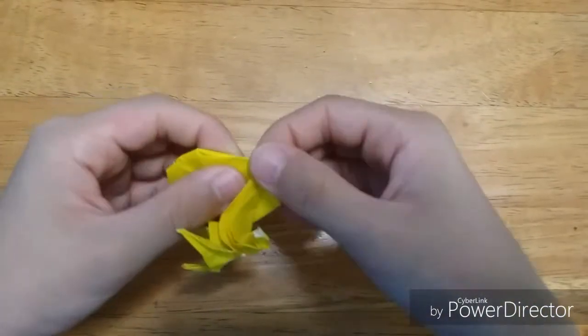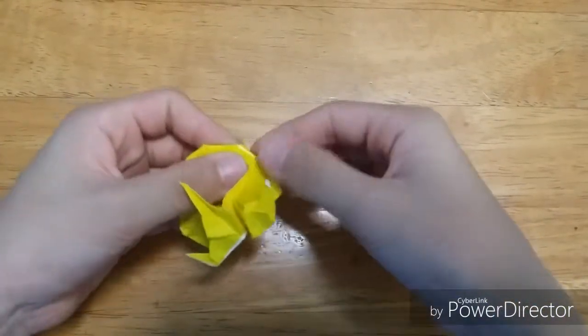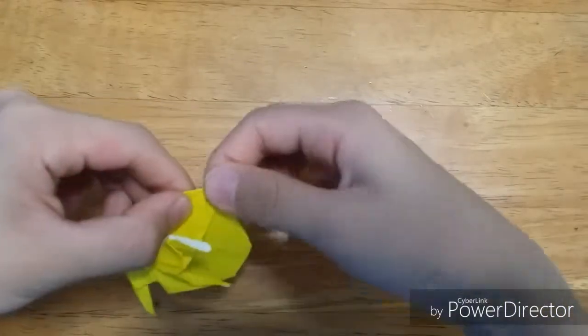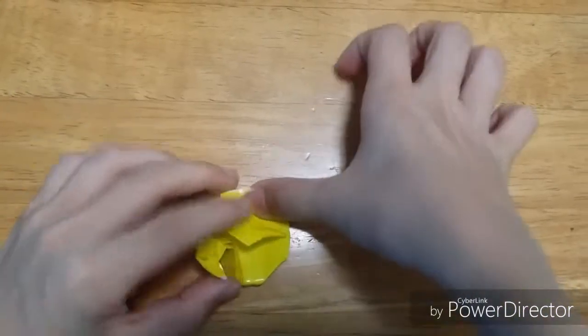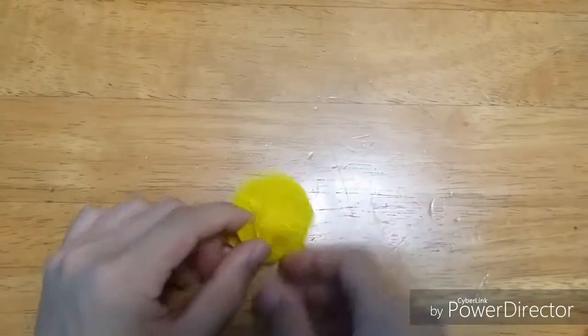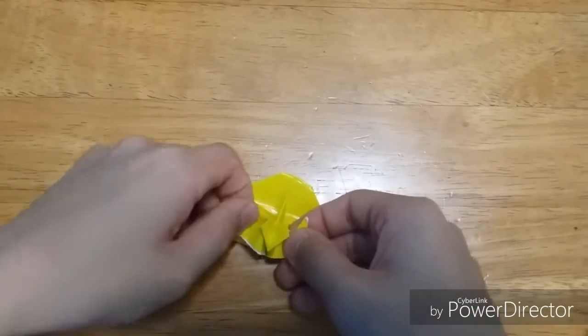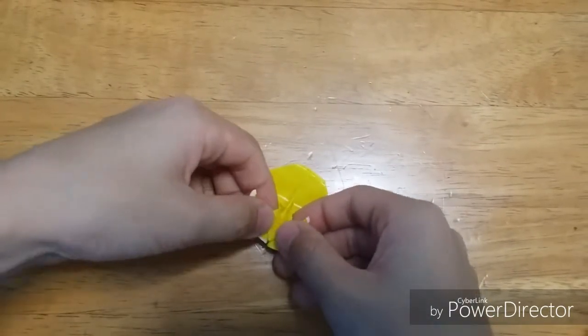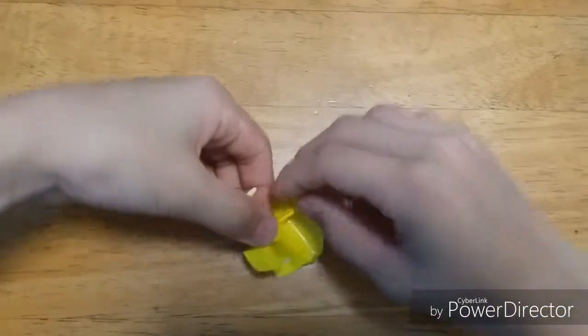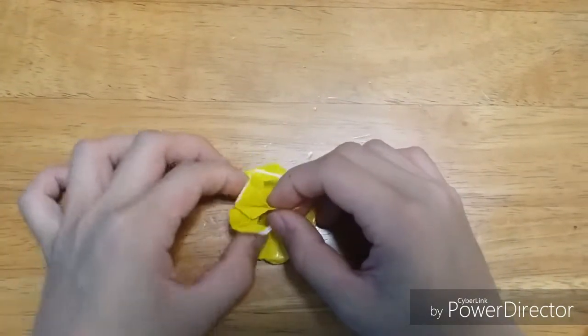Then for the sides, just fold this side bit like that. Basically you fold this when you squash, just like that.